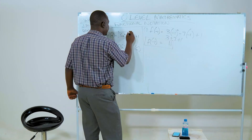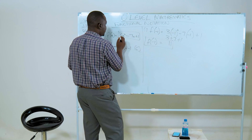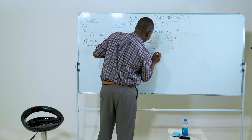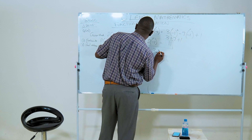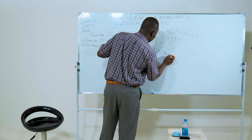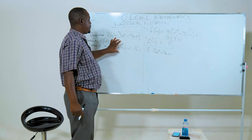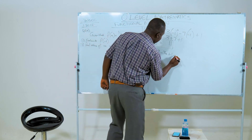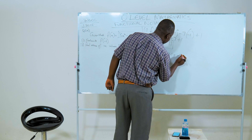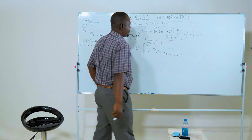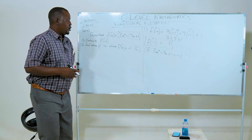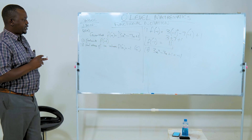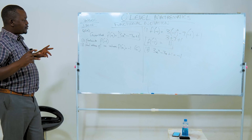So f(x), which is 3x squared minus 7x plus 1, and the question says f(x) is equal to negative 1. As you can see, this is a quadratic equation.